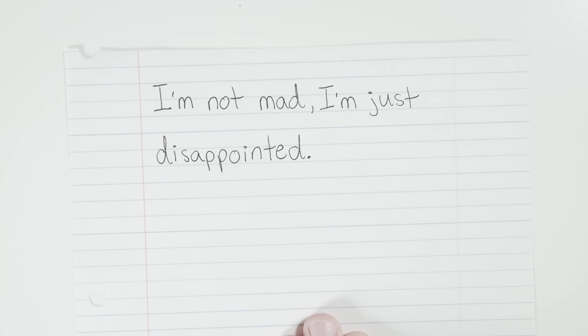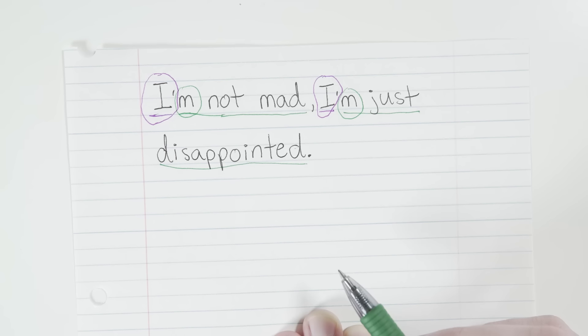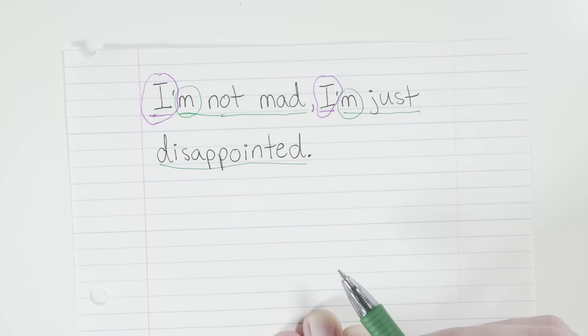All right. Last one. I'm not mad. I'm just disappointed. Okay? Find the subject. Got two. I in the first part, and I in the second part. Predicate? Again, two. Am in the first part, and am again in the second part. All right, so it's a sentence then, right? No.